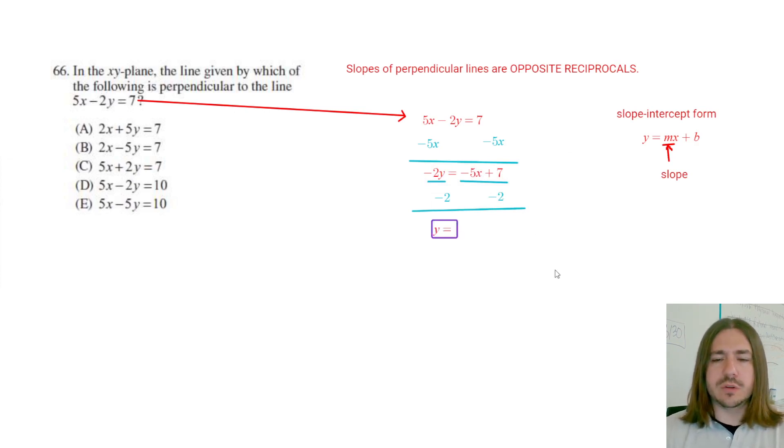When I do that, I get y equals, now I got to divide both of these terms by negative 2. So negative 5 divided by negative 2. Whenever I divide a negative by a negative, it'll turn out to be positive. Same thing goes with multiplication. If you multiply two negative numbers, the result is positive. So 5 halves x and then minus 7 halves because 7 divided by negative 2 is just going to be negative 7 halves.